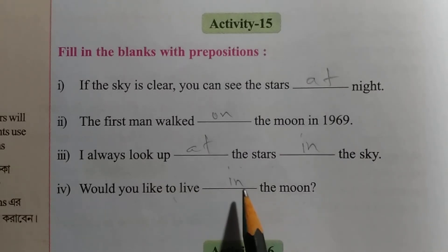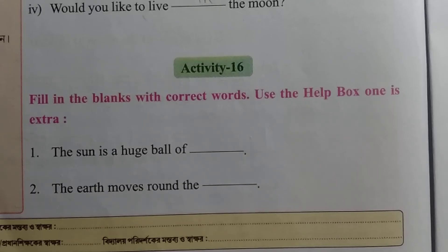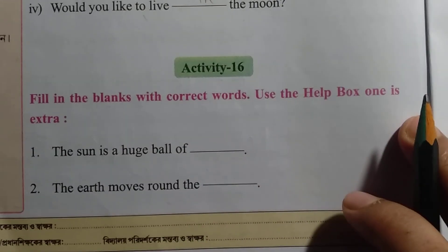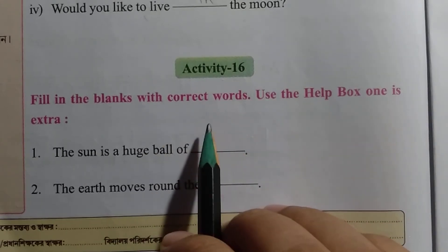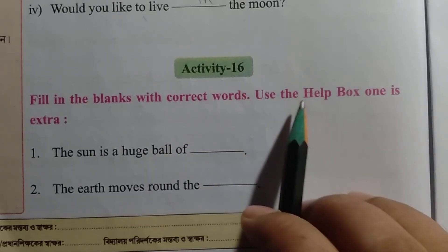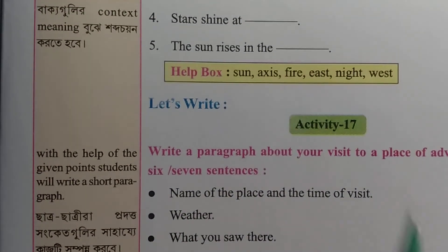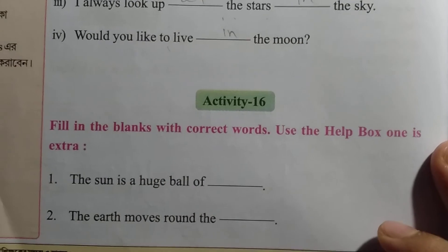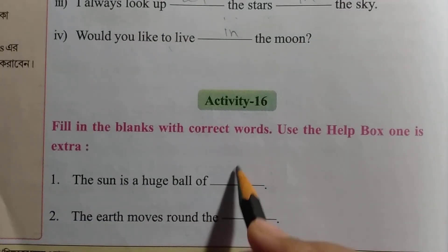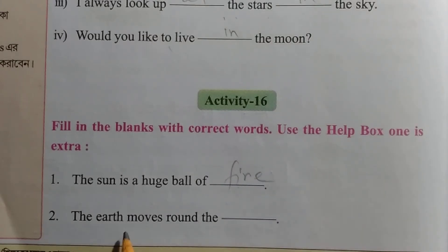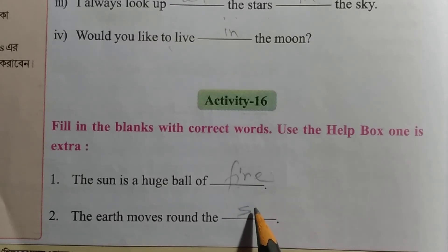Activity 16: Fill in the blanks with the correct words from the passage. The sun is a huge ball of fire. The Earth moves around the sun.